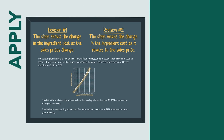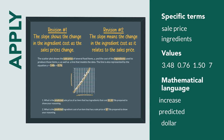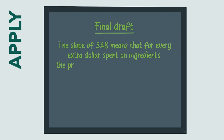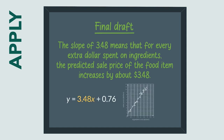For a final draft, we'd expect students to use specific terms, values, and mathematical language in the task to refine their statements further. An example of this would be: the slope of 3.48 means that for every extra dollar spent on ingredients, the predicted sales price of the food item increases by about $3.48, where the statement now includes information and values from the context, the graph, and uses language that demonstrates conceptual understanding of the topic.